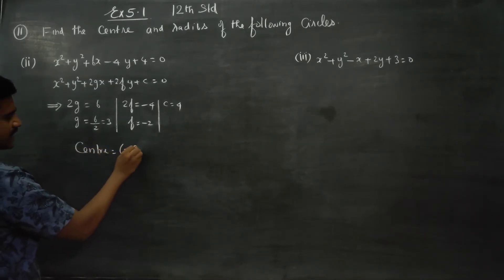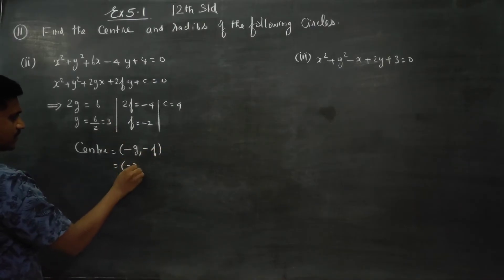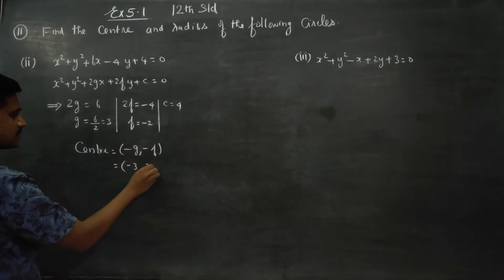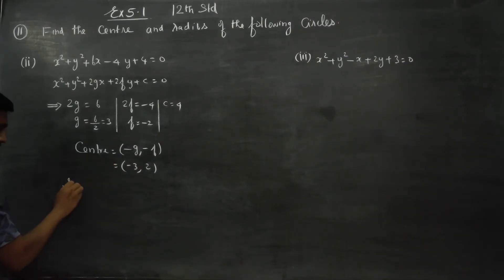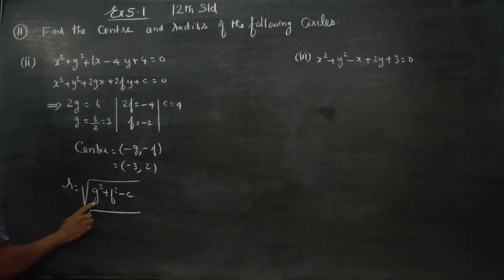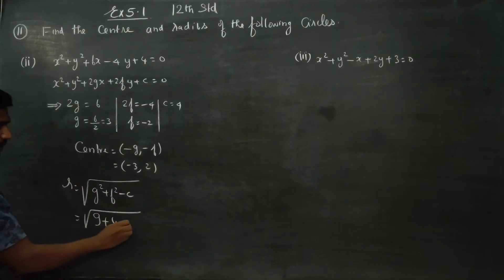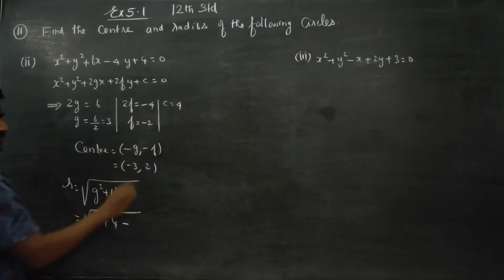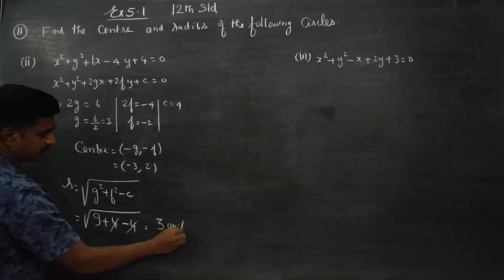Center formula: center of the circle is (−g, −f). So the center is (−3, 2). Radius is equal to square root of g² + f² − c. So that is square root of 3² + (−2)² − 4, which is square root of 9 + 4 − 4. Root 9 gives answer 3 units. This is my radius.